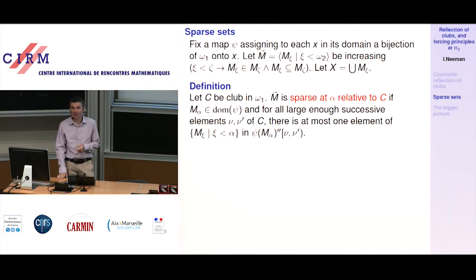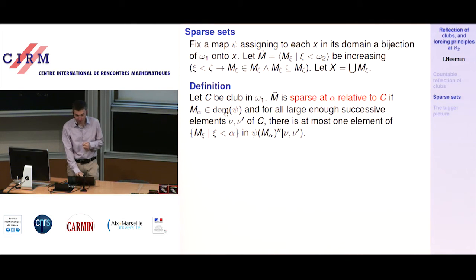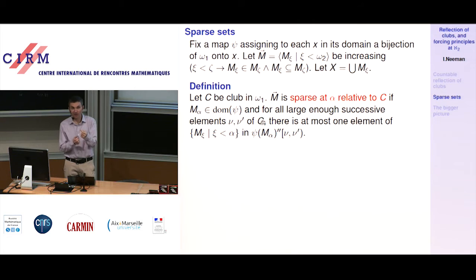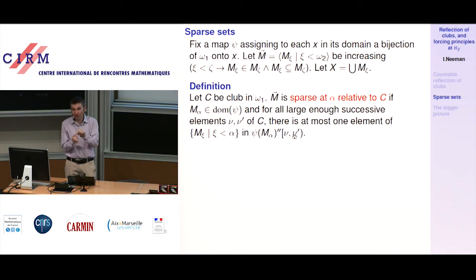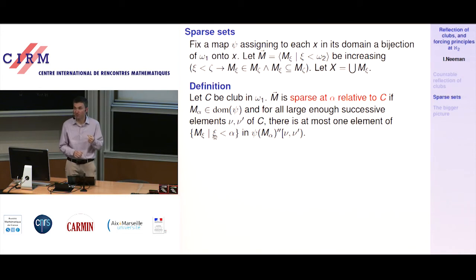Fix some increasing sequence — increasing both in membership and inclusion — and let X be the union of this sequence. Take some clubs in omega_1 and define: m is sparse at alpha relative to C if the following holds for m_alpha. First, m_alpha is in the domain of psi. Then for all large enough successive elements nu, nu' of C, look at psi(m_alpha) — a bijection from omega_1 onto m_alpha — and look at the image of the interval (nu, nu'] under this bijection. This gives you many elements of m_alpha, and I want at most one of them to be one of the m_xi's.